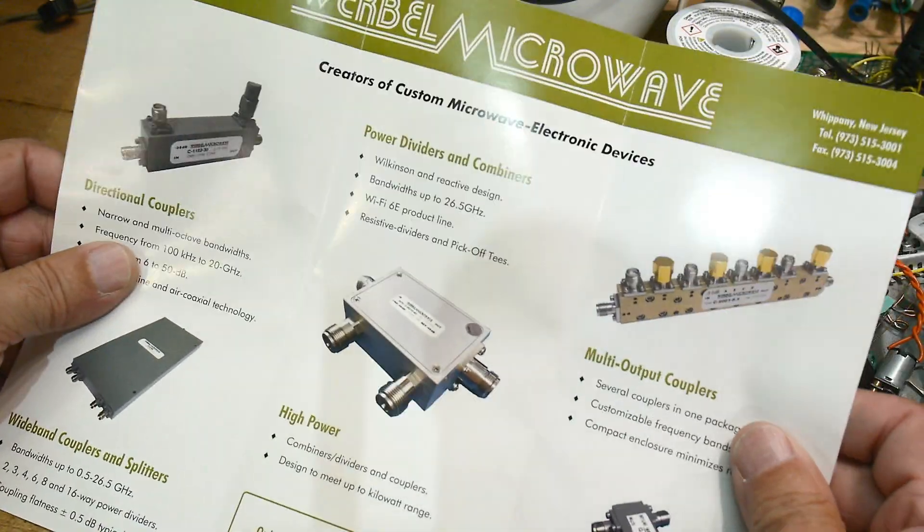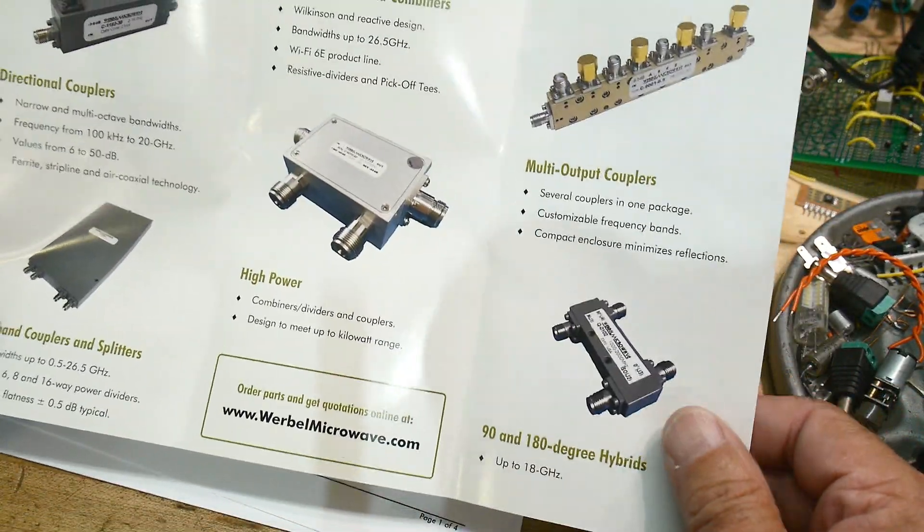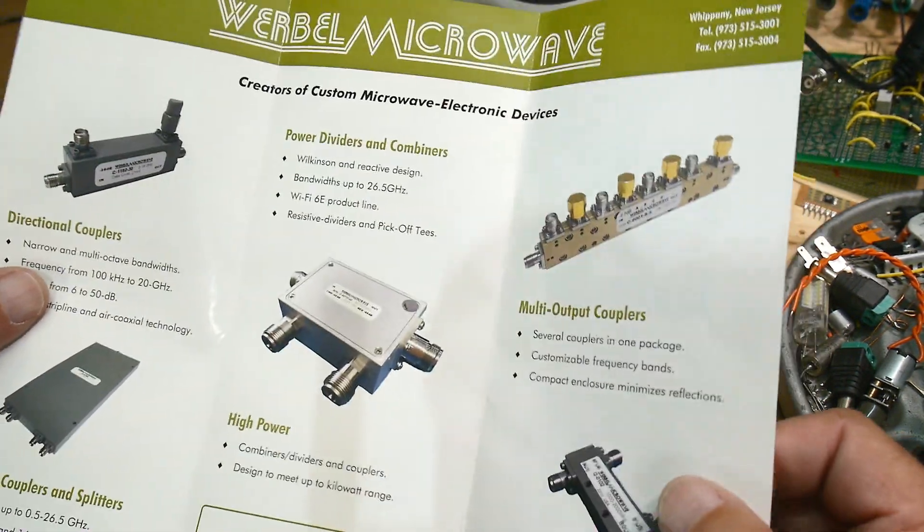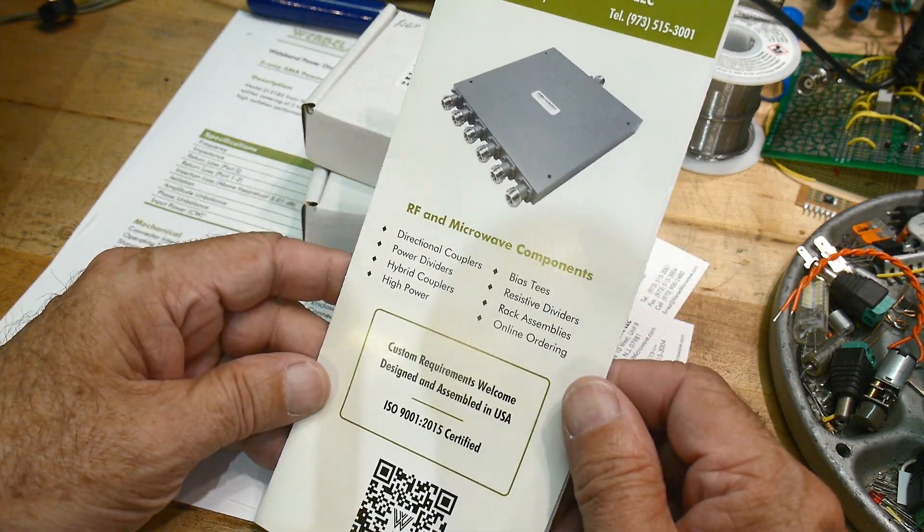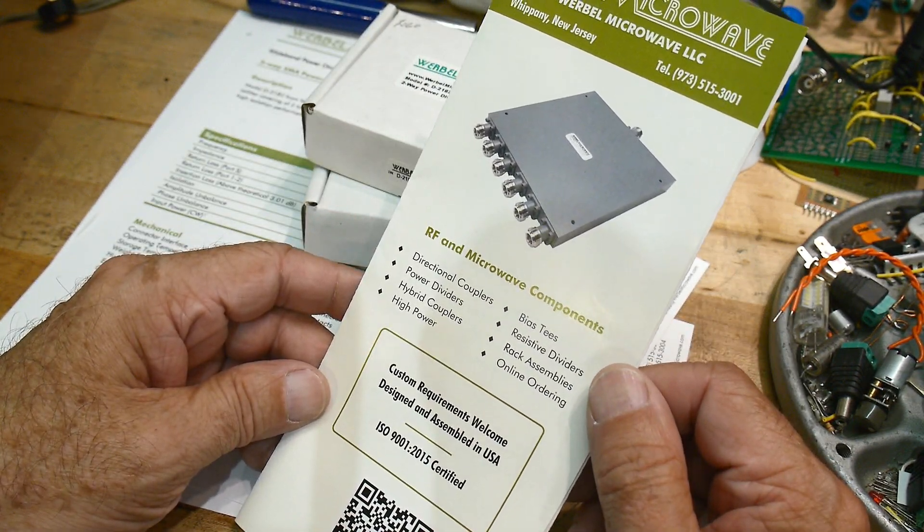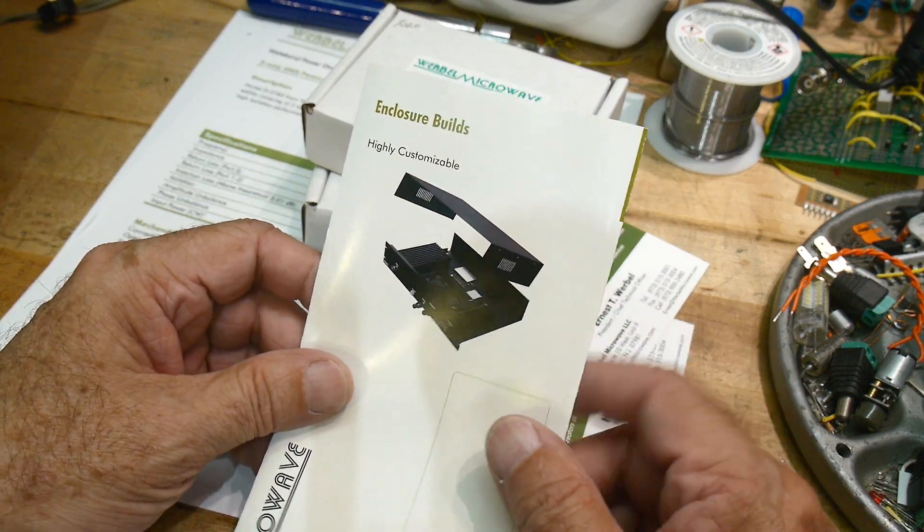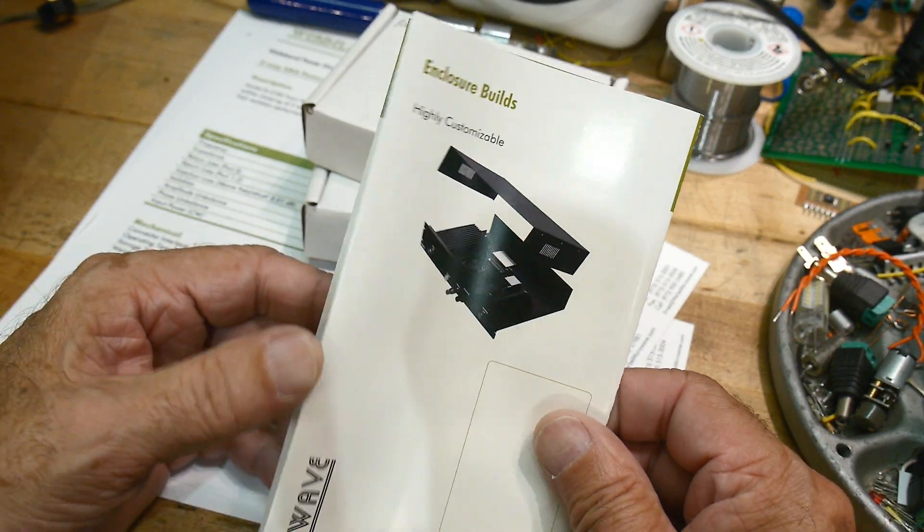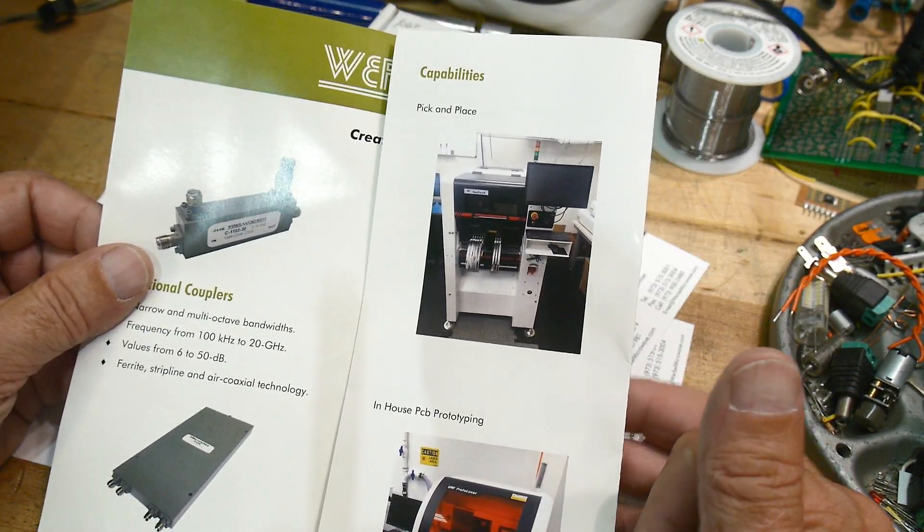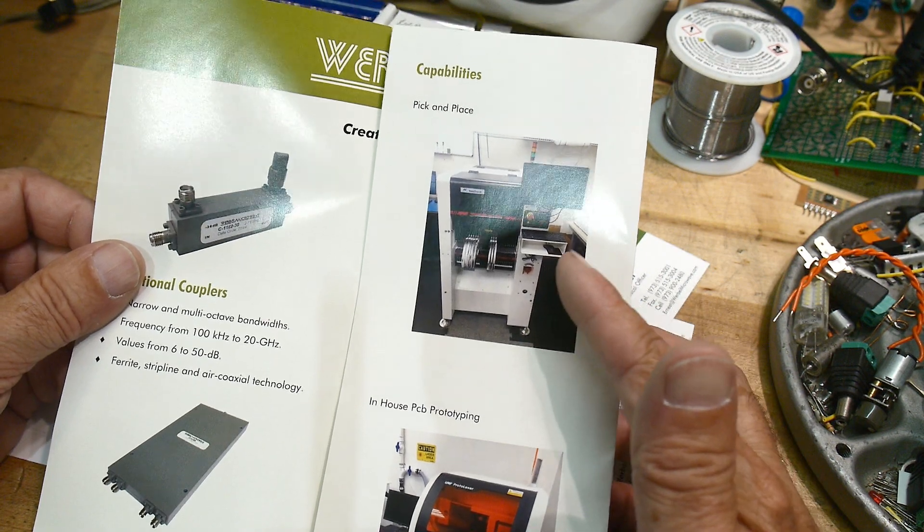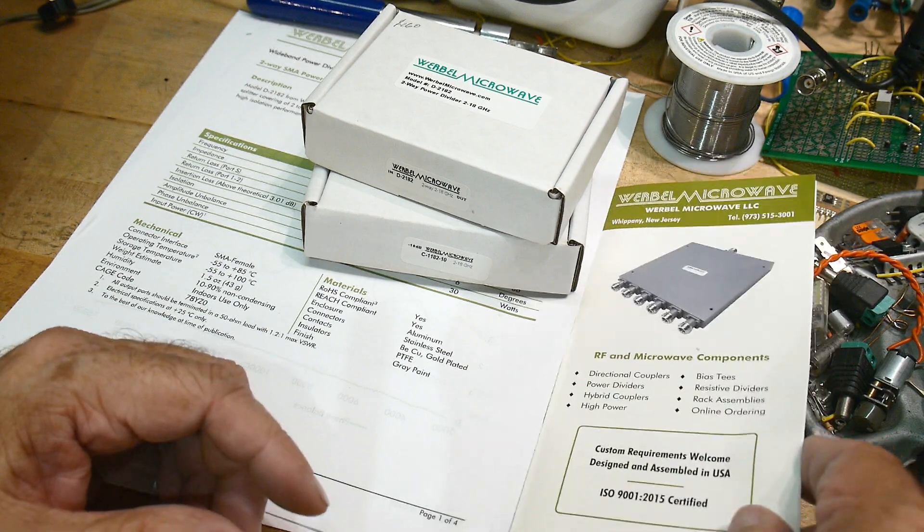They look like they do custom work. Here's their custom requirements page. Looks like things are built here in the US. They do rack enclosures, so they can put together systems for you and things like that. Here's their lab and PC board manufacturing. They have a pick and place robot and a PC board manufacturing setup, so yeah, they can do your work for you.